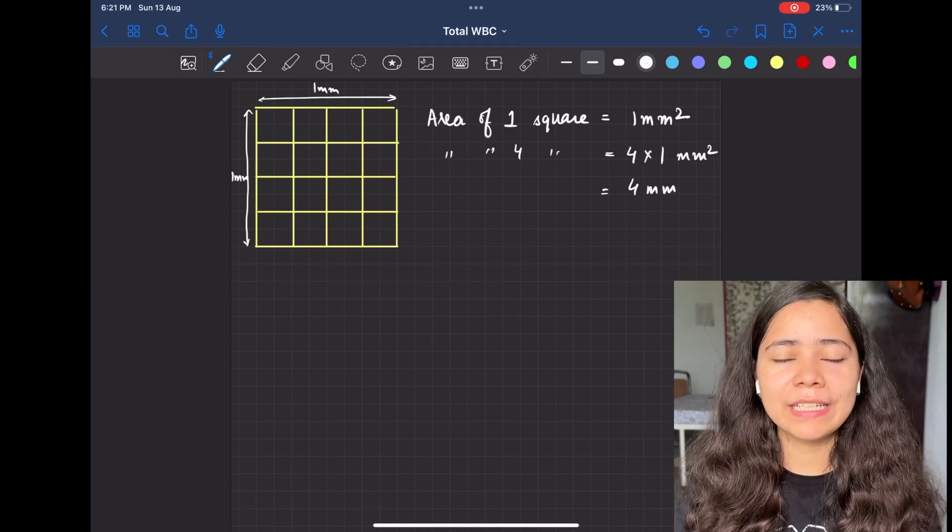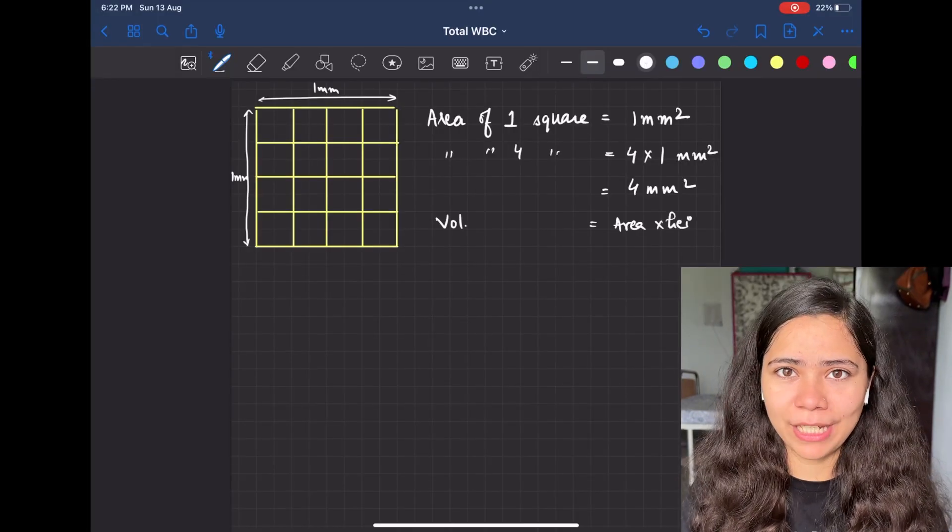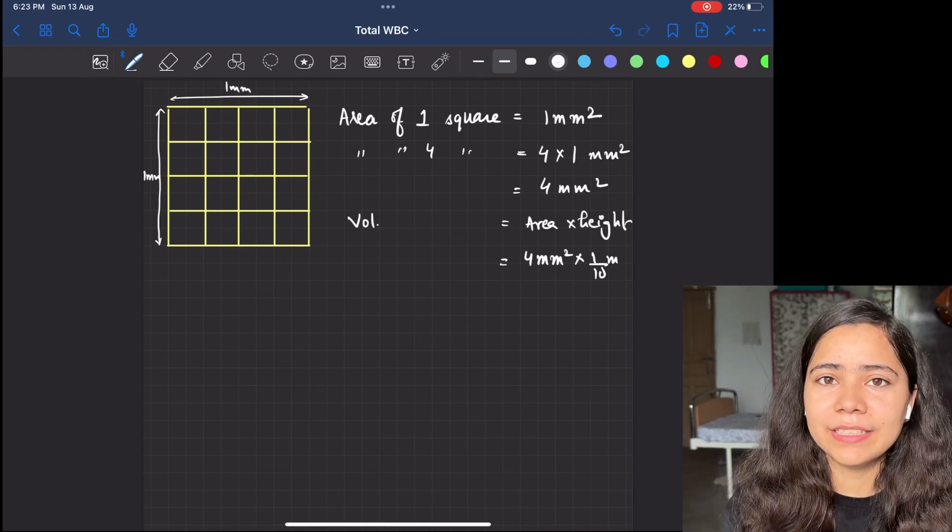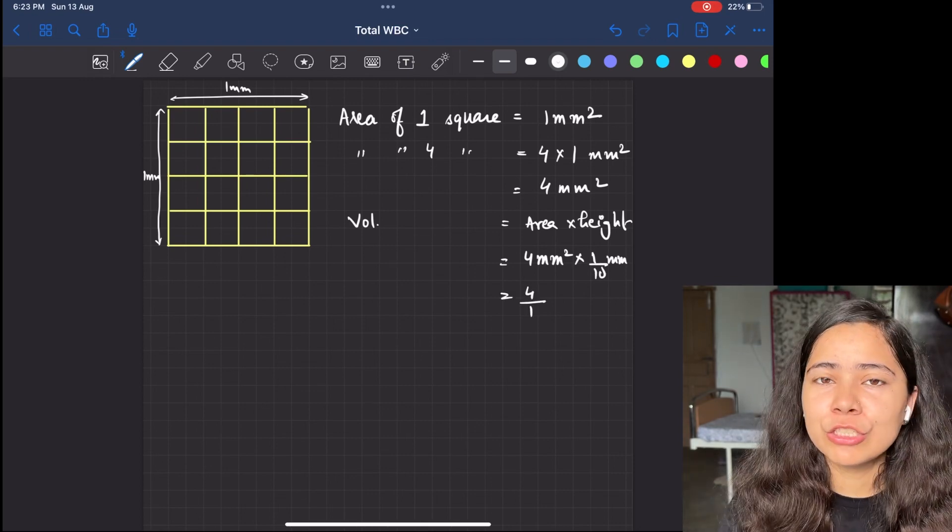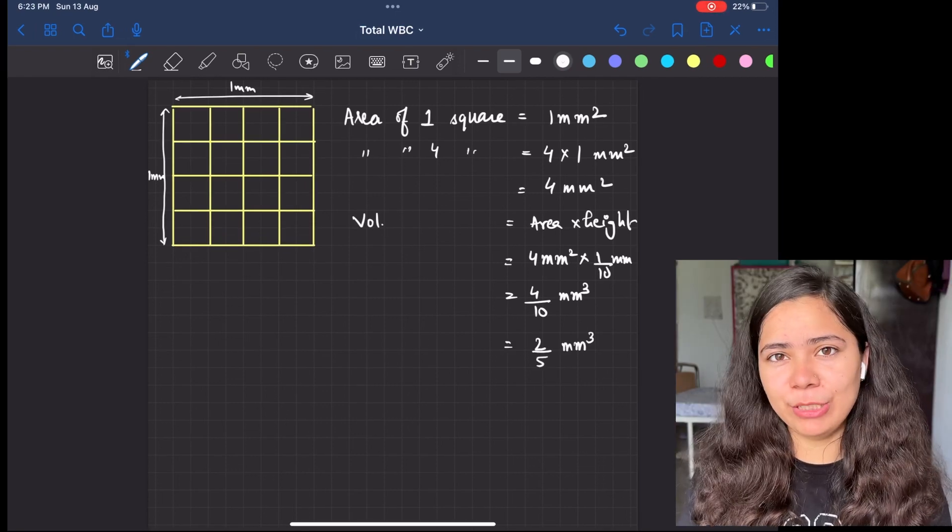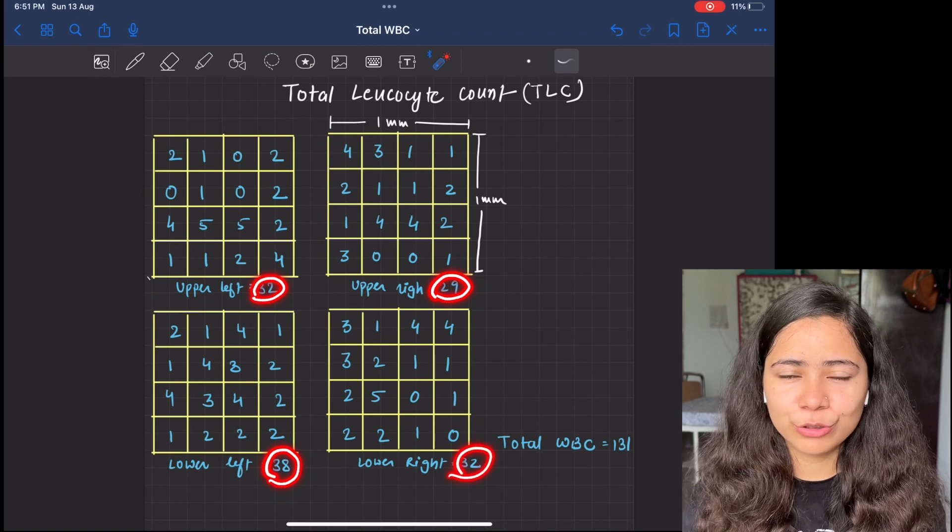And volume equals area × height. So area is 4 mm² and height below the coverslip is 1/10 mm, so it's 4/10 mm³ or 2/5 mm³. The total WBC we counted in all 64 squares is 131.